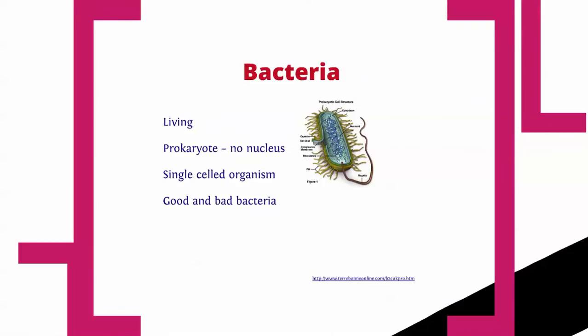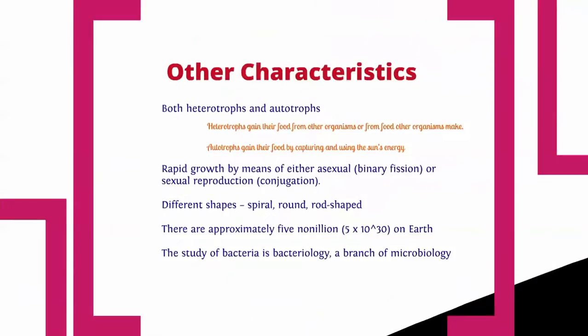That's everything for viruses. Bacteria are living and prokaryotic — no nucleus, single-celled organisms. There's both good and bad bacteria. There's bacteria in your intestines that help you digest food, and bacteria in yogurt. Bacteria can be both heterotrophs and autotrophs; some can actually photosynthesize. They grow really fast, mostly by asexual reproduction — binary fission, where cells just split into two. Or they can sexually reproduce through conjugation, where two cells exchange DNA and then reproduce.